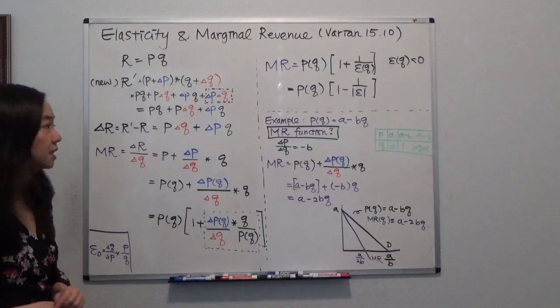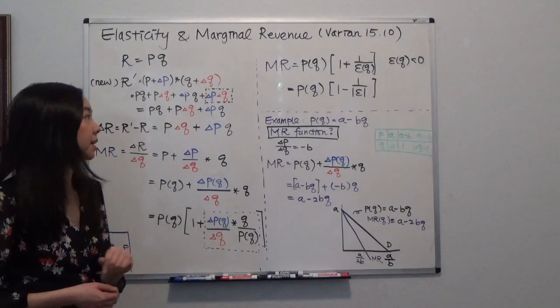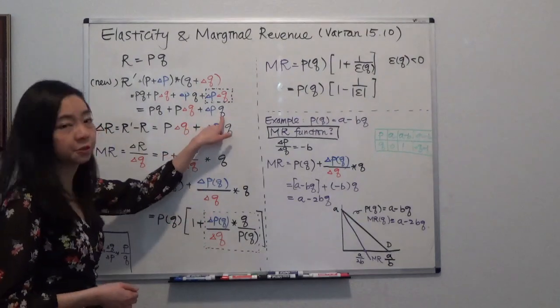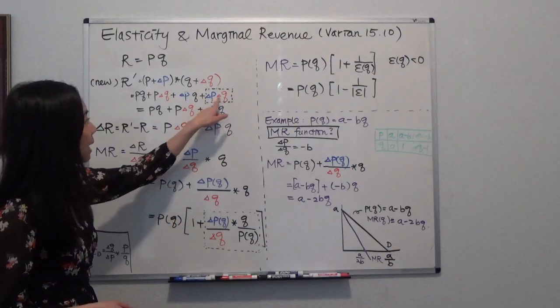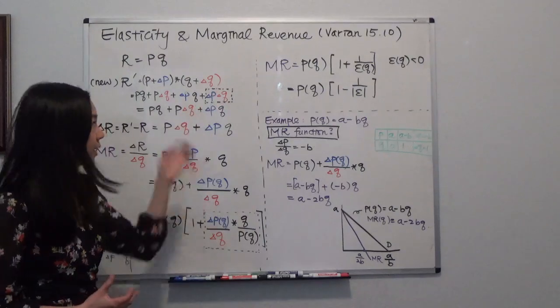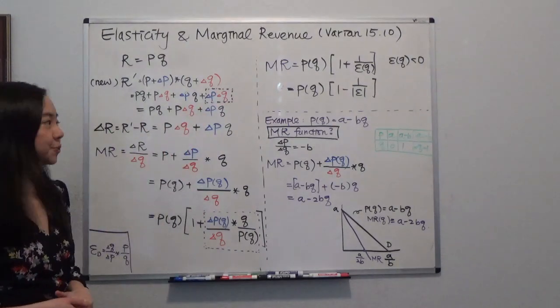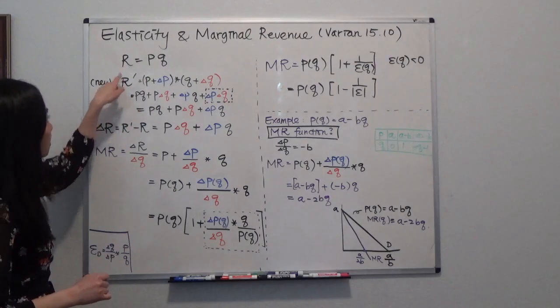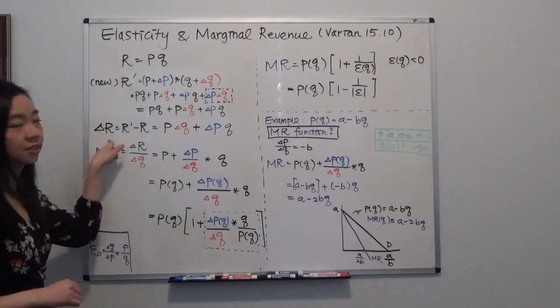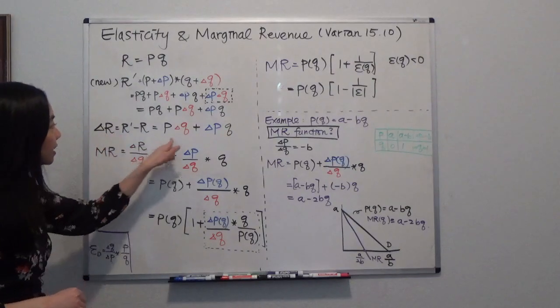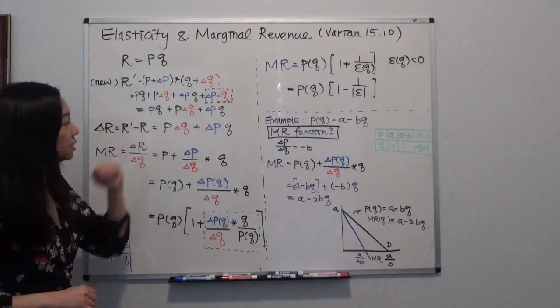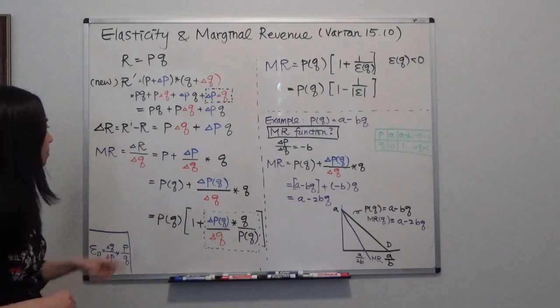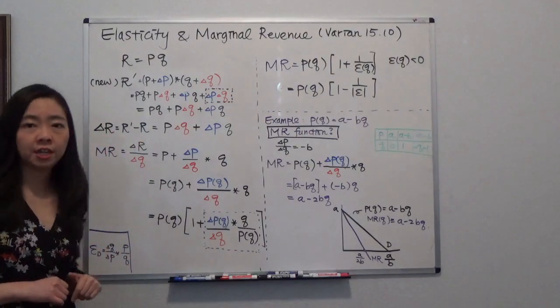So in the previous video we mentioned that your new revenue is equal to price times quantity plus P times delta Q plus delta P times Q. Remember we mentioned that delta P times delta Q is too small, so we can just ignore it. Therefore this is our new revenue. New revenue minus the old revenue will be your change in revenue, and that is equal to price times delta Q plus delta P times Q. So that is the change in revenue.